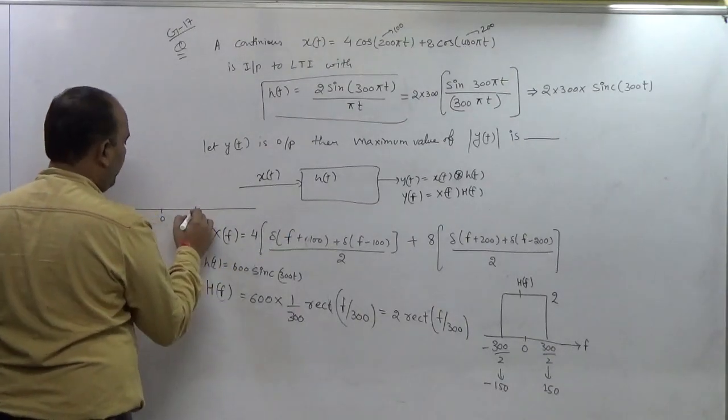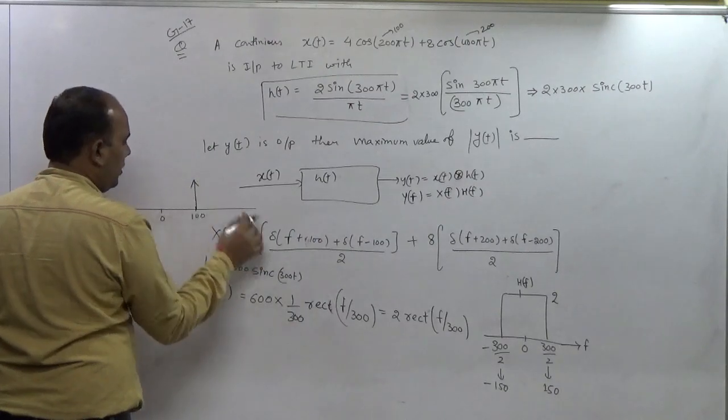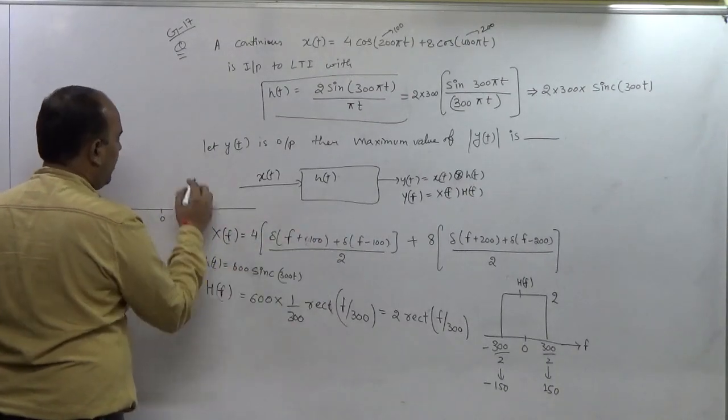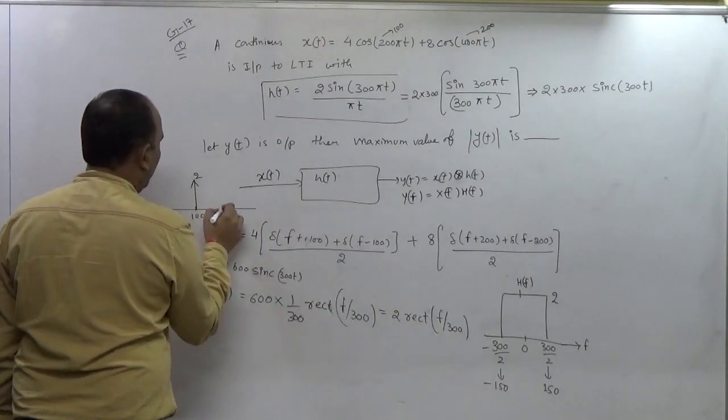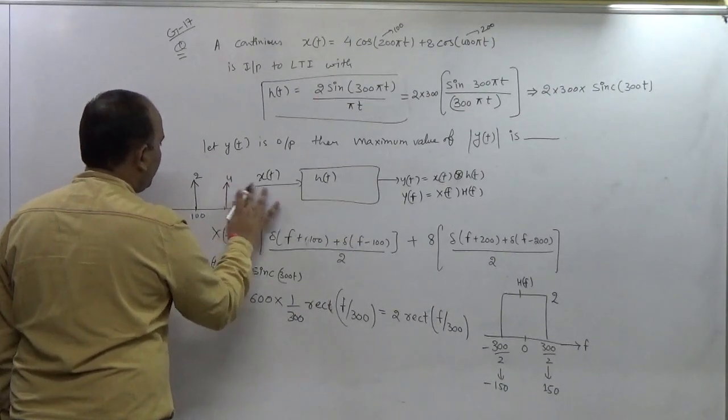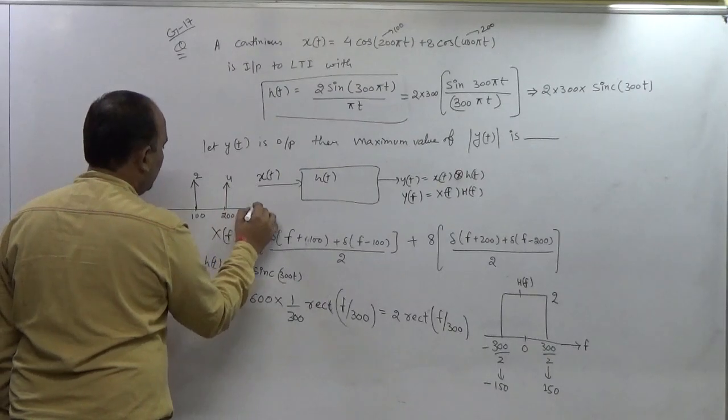And its amplitude will be 4 divided by 2 is 2, and one band will be at 200 and its amplitude will be 4. This is f.